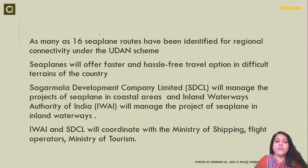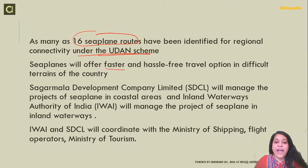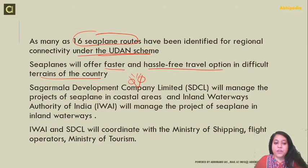There are going to be as many as 16 seaplane routes under the Regional Connectivity Scheme, the Udaan Scheme. Seaplanes will foster a faster and hassle-free travel option in difficult terrains of the country. Sagar Mala Development Company Limited (SDLC) will manage seaplane projects in coastal areas, and the Inland Waterways Authority of India (IWAI) will manage the seaplane project in inland waterways. IWAI and SDLC will together coordinate with the Ministry of Shipping, flight operators, and the Ministry of Tourism.